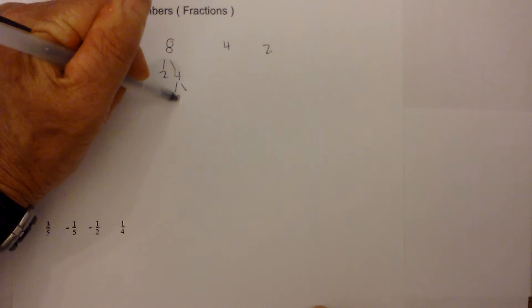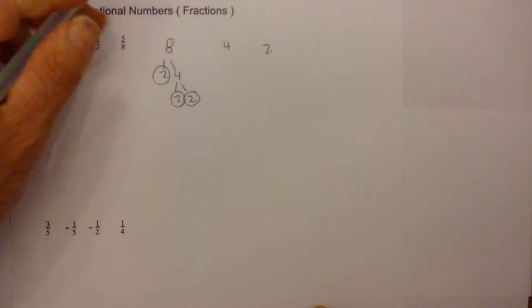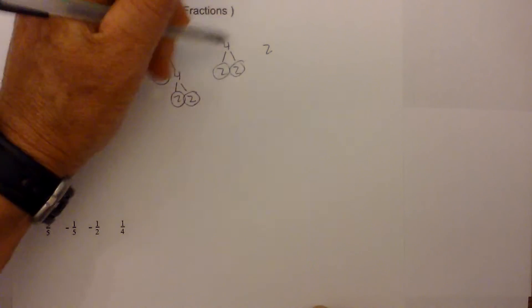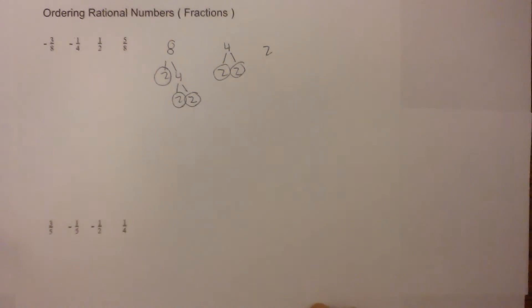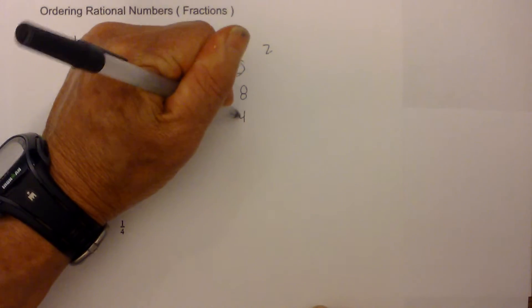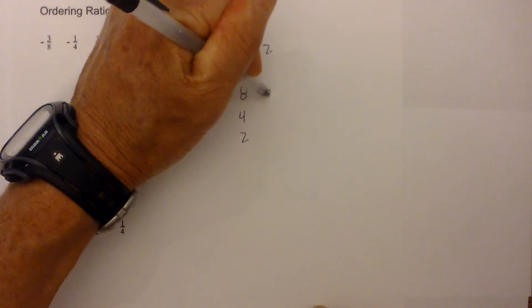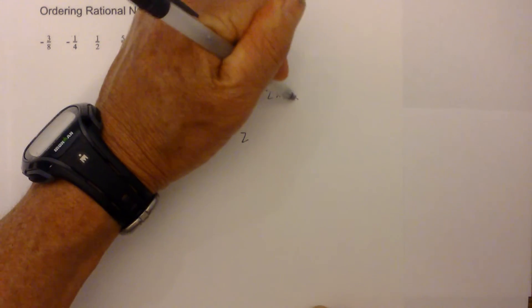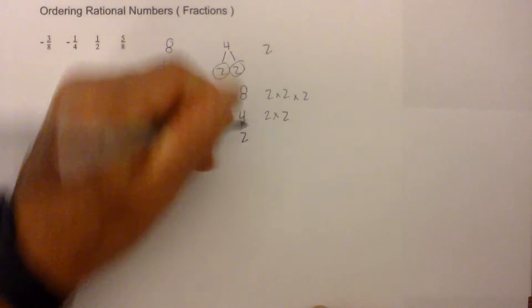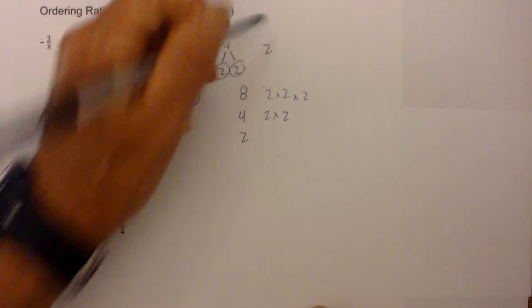The factor tree of eight is two times four, and then four is two times two. I circle the primes, so we have two, two, and two. Four is two times two — both prime — and then two is already factored. Next, I write the numbers down in order and write out their factors: eight is two times two times two, four is two times two, and two is two.